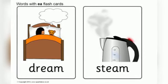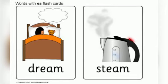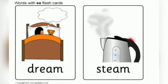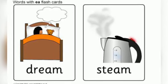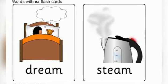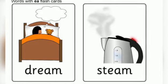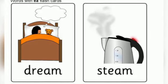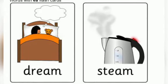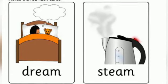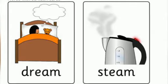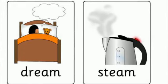S, T, E, A, M — steam. Dream. Steam. There you see that EA and double E are making the same sound in all the words.